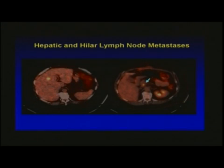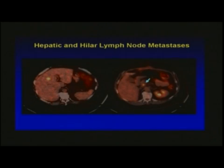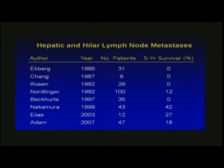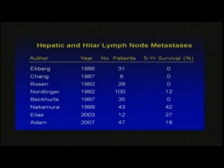Next, let's talk about the hilar lymph node — the presence of metastatic disease in the hilar lymph node. This is a question that has often plagued us in how we manage this. Here's a patient with only on PET scan found to have hilar lymph node positive disease. This is an area where I think there needs to be a paradigm shift. Until fairly recently, this had been considered an absolute contraindication to proceeding with surgical therapy with curative intent. Early series published in the 1980s and early 1990s reported five-year survival rates of zero, which really promoted the concept that we should not be operating on these patients.